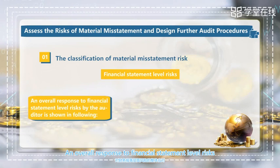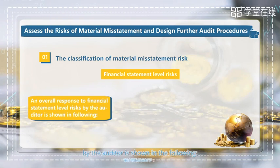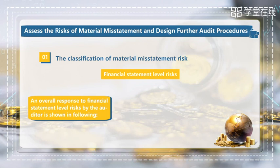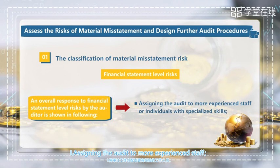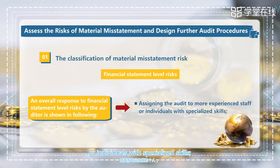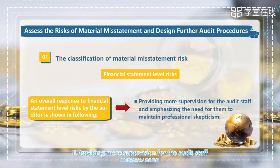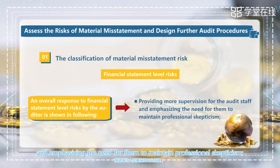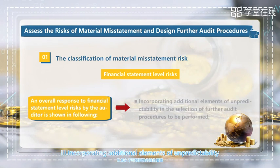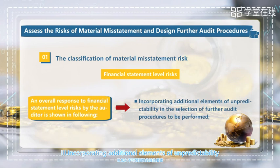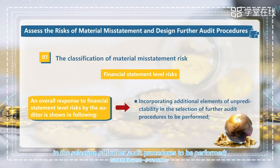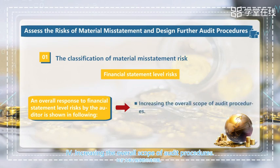An overall response to financial statement level risk by the auditor includes the following. First, assigning the audit to more experienced staff or individuals with specialized skills. Second, providing more supervision for the audit staff and emphasizing the need for them to maintain professional skepticism. Third, incorporating additional elements of unpredictability in the selection of further audit procedures to be performed. And fourth, increasing the overall scope of audit procedures.